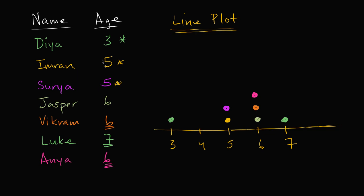Just like that, I was able to take all of the data in this table and put it on this line plot. The reason why this line plot is useful is it helps us see how many of each age we have. When you look at the line plot, it's very clear — there's no one who is age four, and we have the most people who are age six.